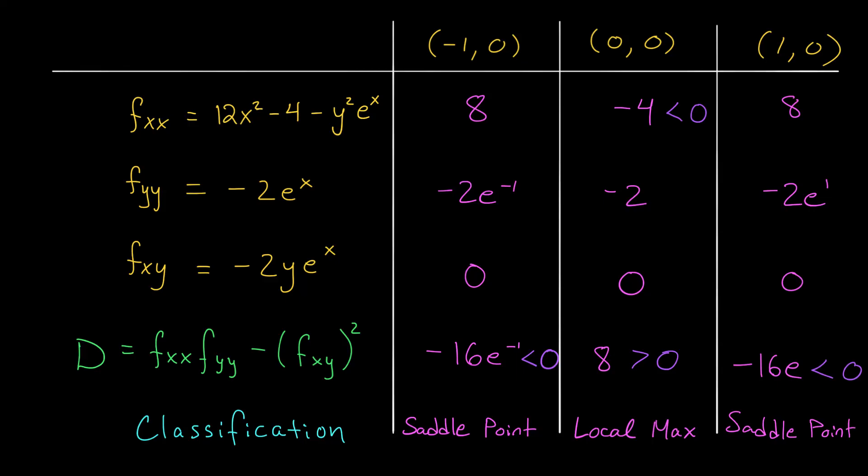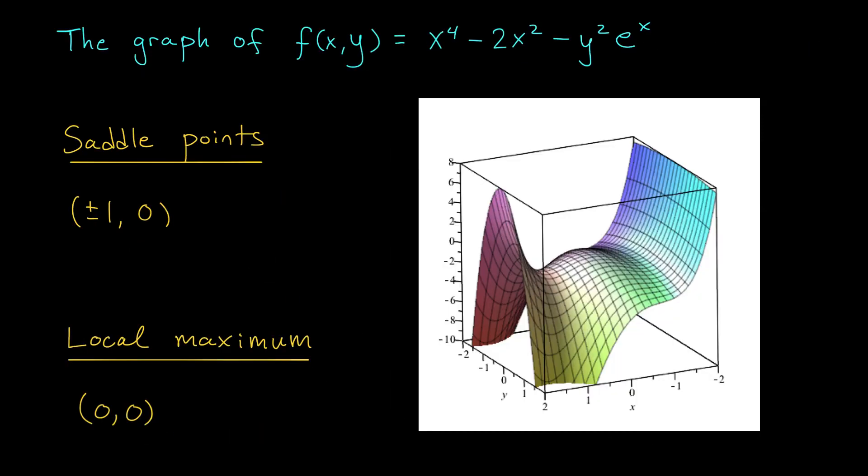Let's check the graph just to make sure. Okay, folks. We found that our function has saddle points at plus or minus 1, 0, and a local maximum at 0, 0. Is that the case in the graph?